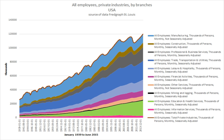Employee benefits are various non-wage compensation provided to employees in addition to their wages or salaries. The benefits can include housing, group insurance (health, dental, life, etc.), disability income protection, retirement benefits, daycare, tuition reimbursement, sick leave, vacation paid and non-paid, social security, profit sharing, funding of education, and other specialized benefits.